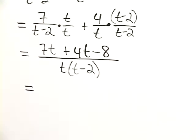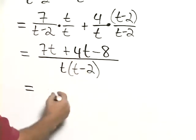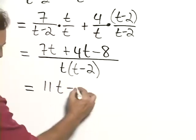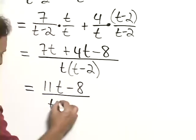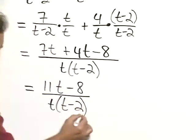Then we add together 7t plus 4t, which is 11t minus 8, all over t times t minus 2.